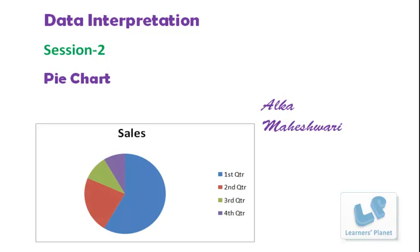Hello friends, welcome to Learners Planet. This is our second session for data interpretation. In this session we will be discussing a set of problems based on pie charts. Before we proceed further, I would suggest you revise the basic sessions of percentage, ratio and proportion, averages, and you should also be aware of the digital root concept that I have already discussed in my calculation sessions. Unless you are clear with all of these topics, it will be really difficult to understand the time-saving techniques in data interpretation.